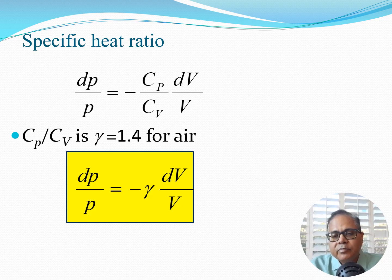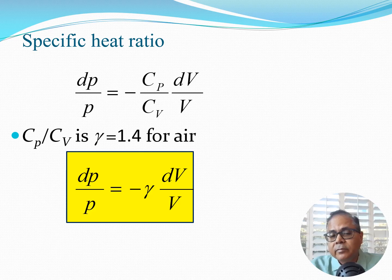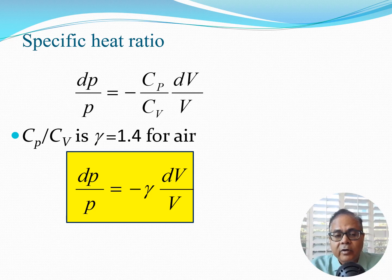We are going to couple this isentropic relationship with the Euler equation to get relationships for velocity, leading to the compressible Bernoulli equation — the Bernoulli equation for compressible flow.